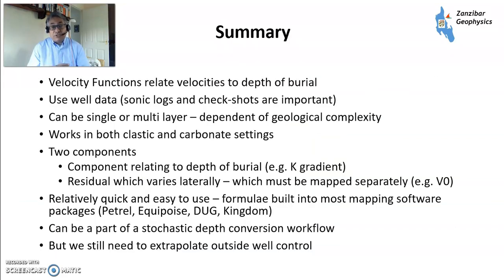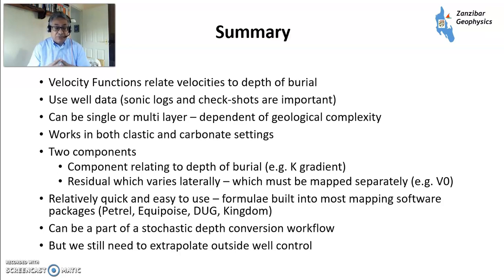To sum up: velocity functions relate the velocities of rocks to depth of burial. They use well data — sonic logs and check shots are important. They can be single or multi-layered depending on geological complexity. For layers like halite you can put in a fixed velocity, since the compaction functions won't work there. They can work in both clastic and carbonate settings, particularly chalks which have a well-defined velocity increase with burial. There are two components: the depth of burial, such as the K gradient, and the residual which varies laterally — for example V0. These are relatively quick to use with formulas built into most mapping software: Petrel, Openworks, Valet, Kingdom — they've all got them. Please do use the QCs. You can also use this as part of a stochastic workflow where you vary V0. And you still need to extrapolate outside well control — I have a separate video on that. Thank you very much, please like, please subscribe, and I'll see you on the next one.